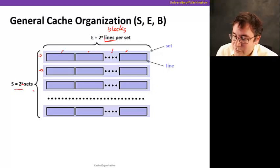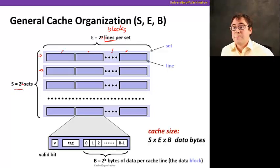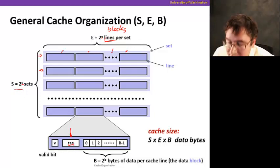When a cache has 2^S sets and 2^E lines, each line in the cache has a bit of metadata. The first one is the tag that we saw in the previous video.